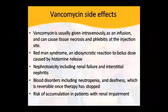Side effects of vancomycin: given intravenously, it can cause tissue necrosis and phlebitis at the injection site. Red man syndrome is an idiosyncratic reaction — if given as a bolus dose, the person develops flushing and other symptoms called red man syndrome. Additionally, it can cause nephrotoxicity and renal failure, including interstitial nephritis. Blood disorders can also occur — neutrophil count is reduced. If the drug is stopped, these effects are reversible.